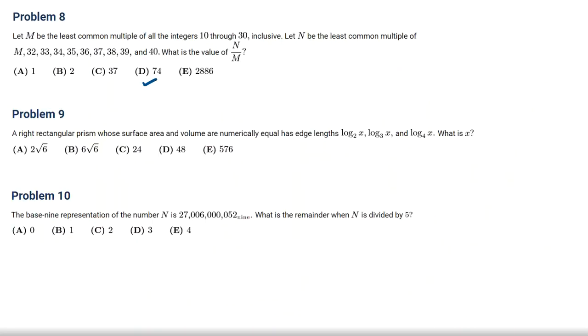Okay, we've solved 9. Now let's focus on problem number 10. It says the base 9 representation of the number N is 2700600052 in base 9. What's the remainder when N is divided by 5?